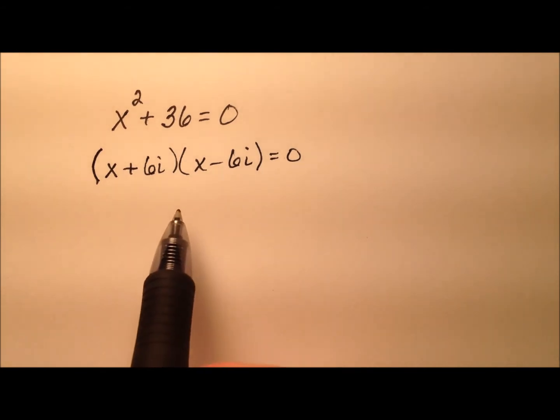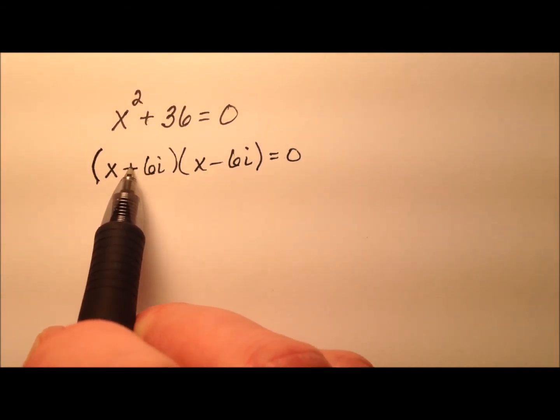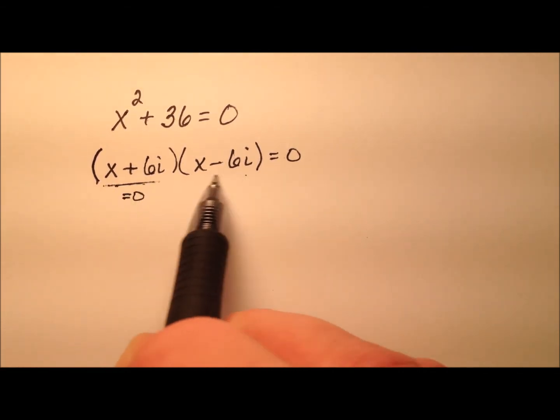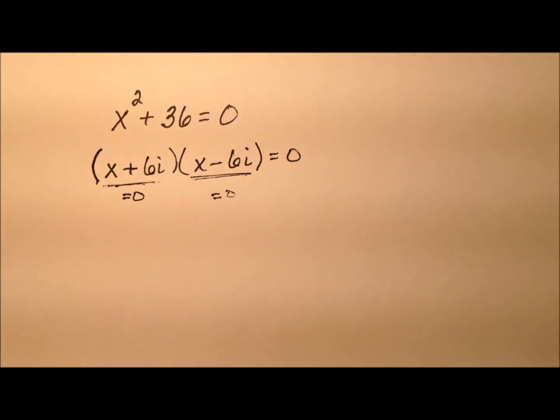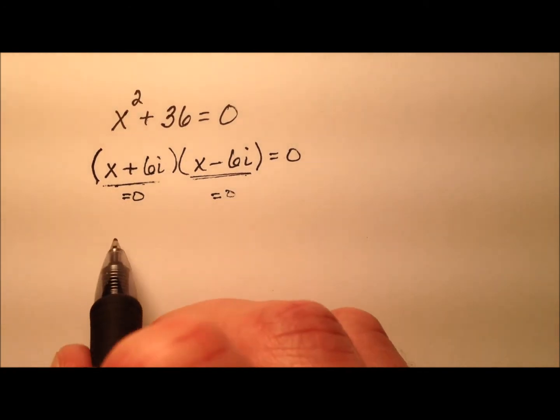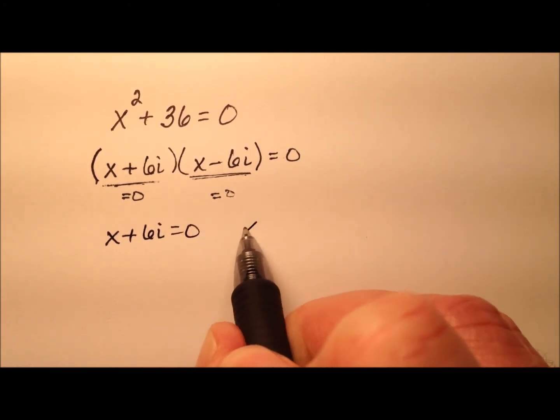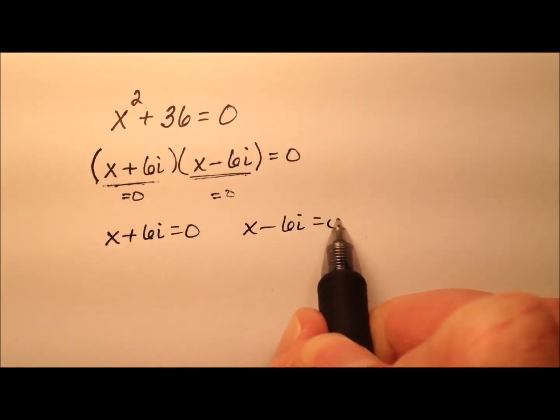I'm going to use the zero property of multiplication, which says if I multiply these two and I get 0, it means either this equals 0 or this equals 0. So I'll go ahead and consider both cases: x plus 6i equals 0, and x minus 6i equals 0.